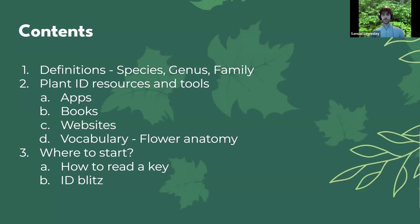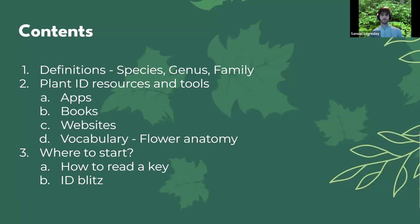The contents of this webinar: we're going to talk about definitions — species, genus, and family. We're going to see some apps, books, websites, and vocabulary about flower anatomy. These are all resources to help you learn about plant ID specifically. There are traditional and established resources that are very useful for going deeper into plant identification. And we're going to learn how to read a key — the basics of it. The ID blitz is also going to be really important today, where we'll get you right into IDing plants.